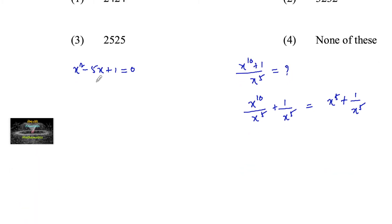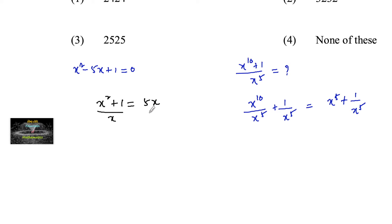Since x squared minus 5x plus 1 equals 0, we can write x squared plus 1 equals 5x. Dividing both sides by x (assuming x is not equal to 0), we get x plus 1 upon x equals 5.